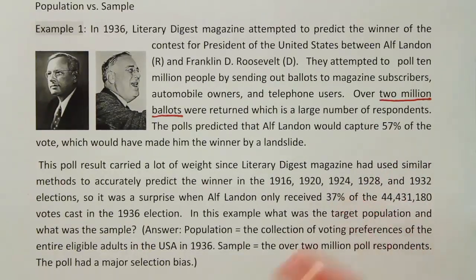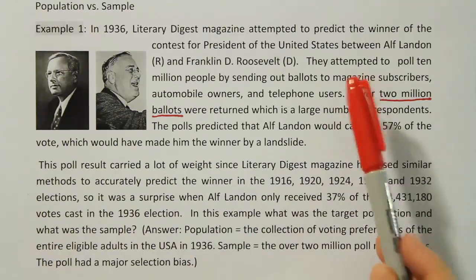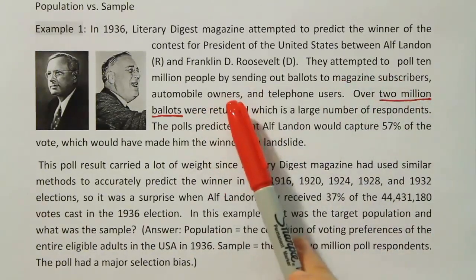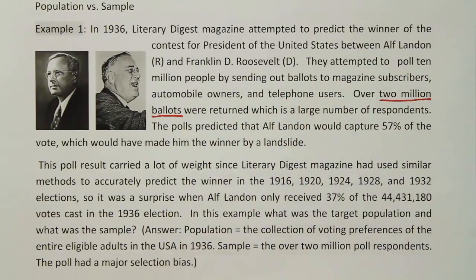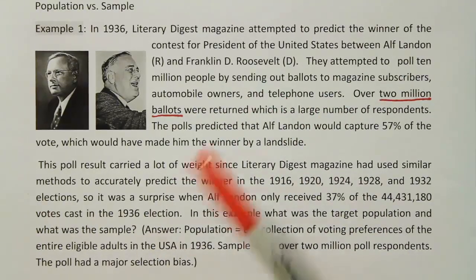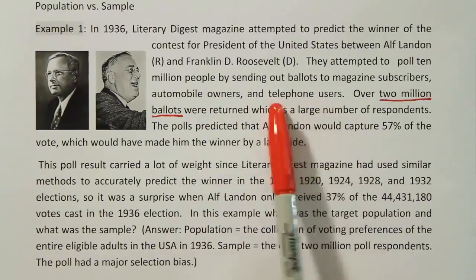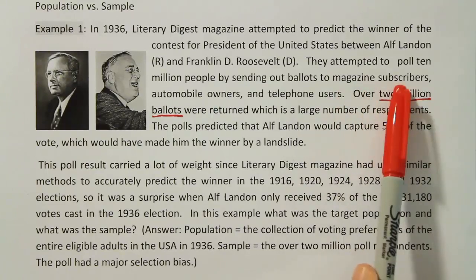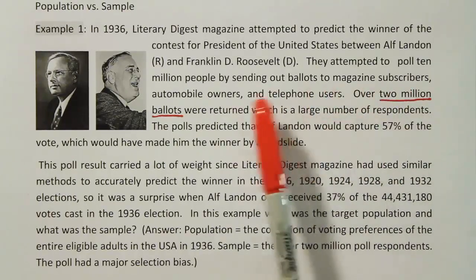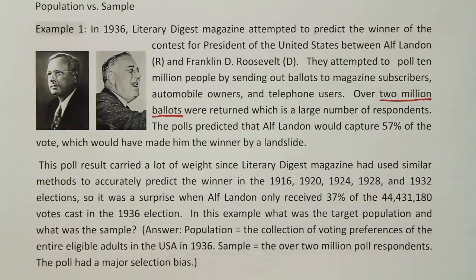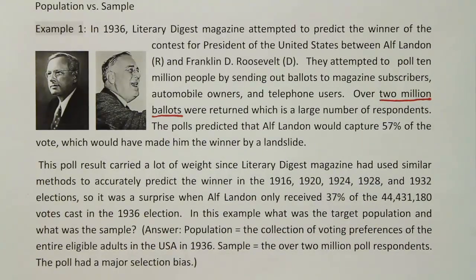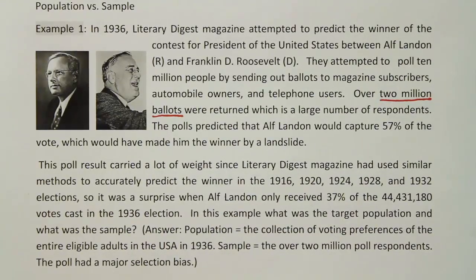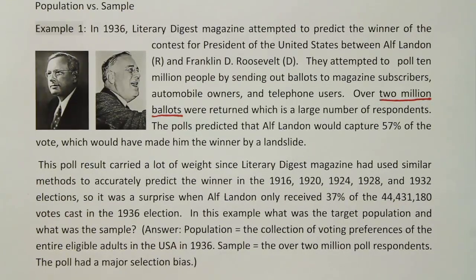The reason for that is that essentially they polled only people who were magazine subscribers, automobile owners, and telephone users. This is at a time during the Great Depression when very few people had automobiles, not so many people had telephones, and magazines were still pretty much a luxury for a lot of people in the United States. So basically, they were committing a major selection bias, meaning that they were only polling people who were well off, or at least well off compared to the typical person at that time going to the polls to vote.